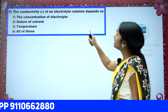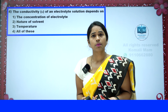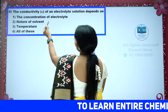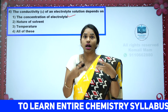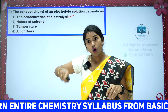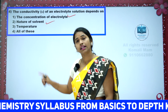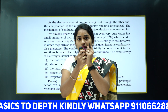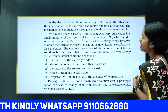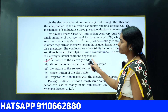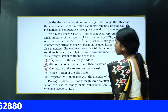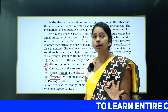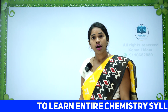Next question: the conductivity of an electrolyte solution depends upon what? Conductivity depends on concentration — more concentration means more ions, which means more conductivity. If it is a strong electrolyte, more ions give more conductivity. The nature of the electrolyte, size of the ions produced and their solvation, nature of solvent and its viscosity, concentration of the electrolyte, and temperature are all important factors. Higher temperature causes ions to absorb energy and move faster, increasing conductivity.